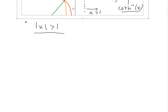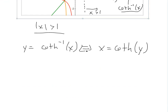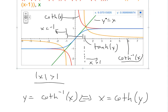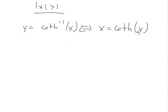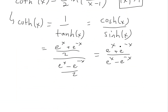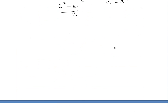Now we can go ahead and prove the rest of the conversion. If we let y equal the inverse hyperbolic cotangent of x, that is the same as writing x equals hyperbolic cotangent of y. This is the definition of an inverse function — you just flip x and y, then solve for y. That's also why we have the mirror across the y = x line.